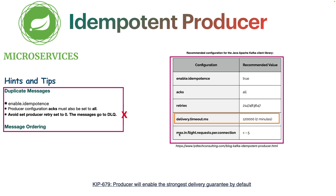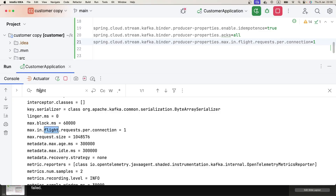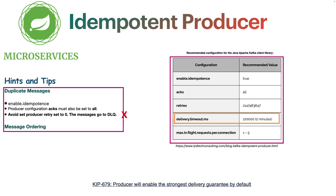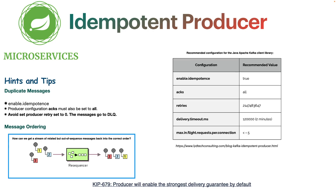The next configuration is delivery.timeout.ms, whose default value is 2 minutes. This property sets the total time in milliseconds that the producer will spend sending a message — including retries — before marking it as failed. We can leave this property at its default. Also, don't confuse this with the 'resequencer' pattern from enterprise integration patterns — that's something different we may cover in a future video.